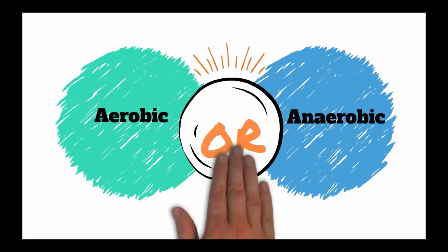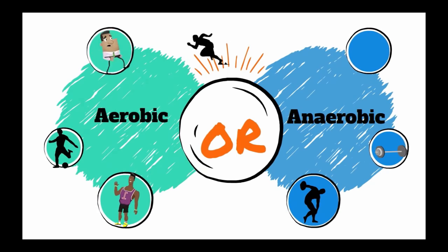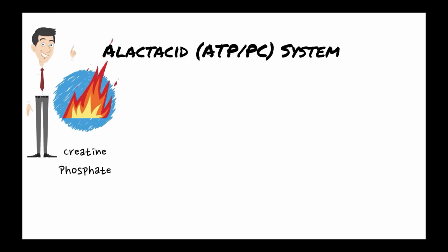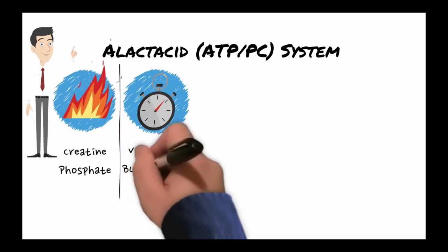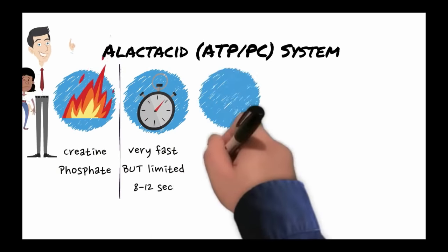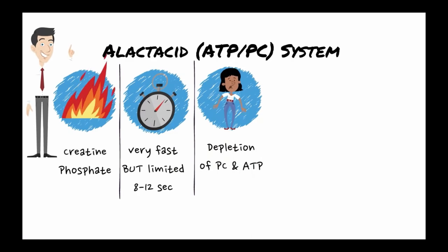The three energy systems can be broken into two groups—they can be either aerobic or anaerobic in the way that they produce ATP. In the alactic acid ATP phosphocreatine system, the source of fuel is creatine phosphate. Its efficiency in producing ATP is very fast, but it's limited to only being 8 to 12 seconds in duration.